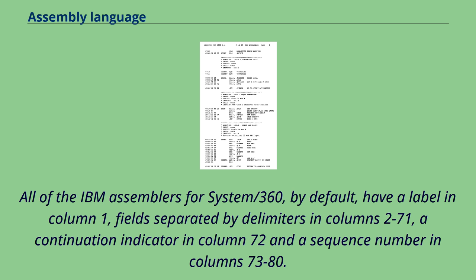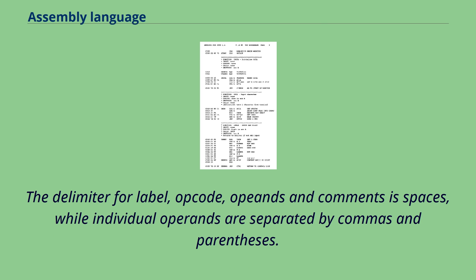All of the IBM assemblers for system/360, by default, have a label in column 1, fields separated by delimiters in columns 2 to 71, a continuation indicator in column 72, and a sequence number in columns 73 to 80. The delimiter for label, opcode, operands and comments is spaces, while individual operands are separated by commas in parentheses.